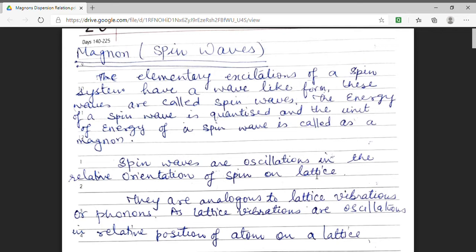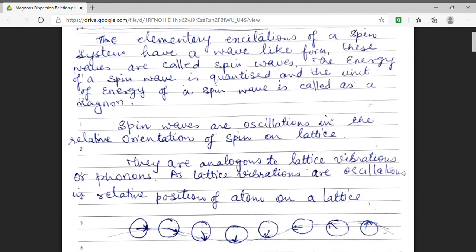Now, in our today's session, we will discuss magnons that is spin waves. What are spin waves? Spin waves are oscillation in the orientation of spin on a lattice.